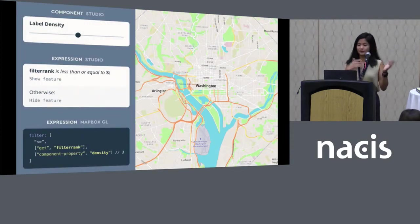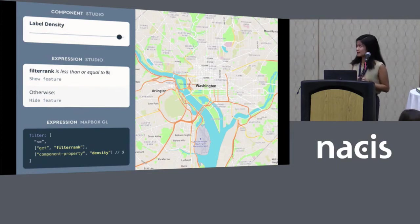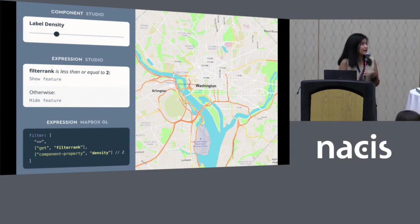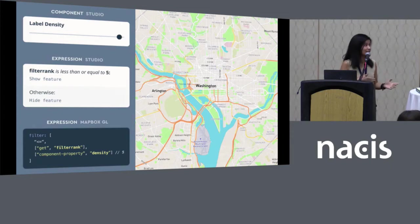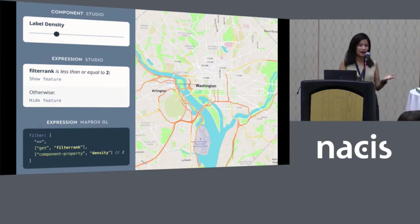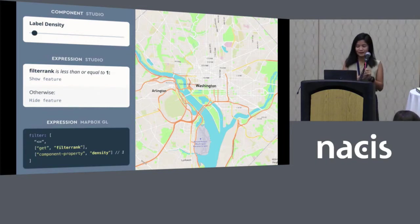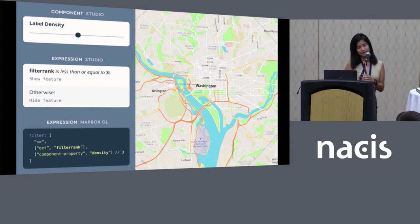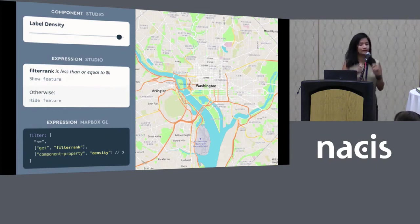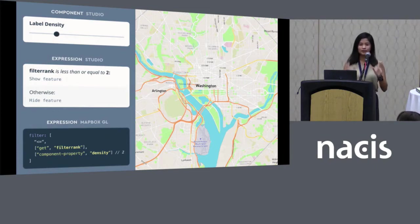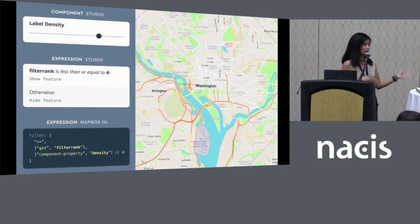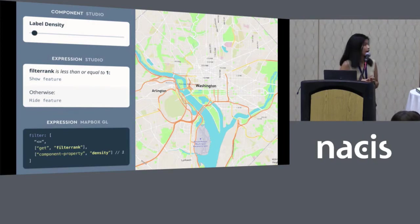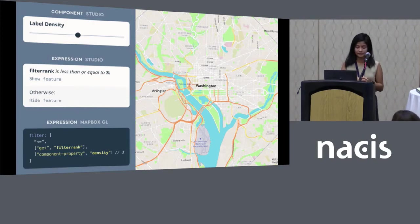I've just shown a few examples of how to use expressions to power your map styles. The challenge with expressions, however, is knowing when and how to assemble them with so many possibilities available. The map design teams at Mapbox are currently working on a new feature that packages up layers into what we're calling components.